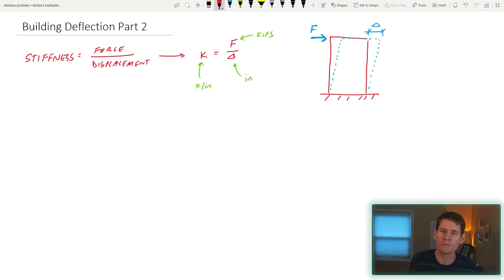And the amount with which that building displaces is dependent upon the stiffness of the structure, and mainly the stiffness of the vertical lateral elements that make up that structure. So a braced frame or shear walls or moment frames all have a certain stiffness to them that you can calculate and determine in order to figure out how much your building is going to move under a design force.